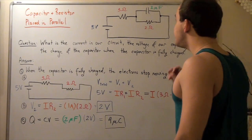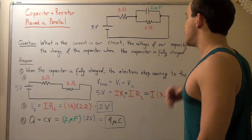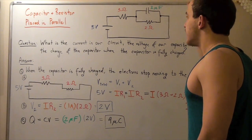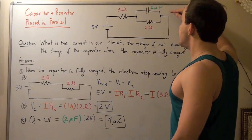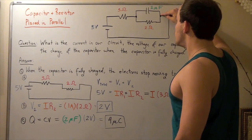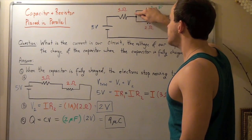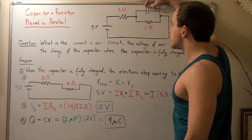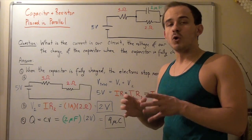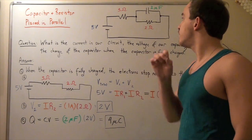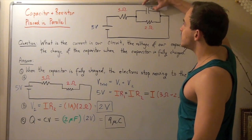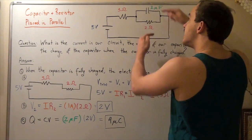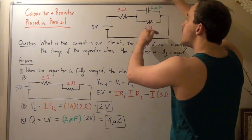Now let's find the voltage and the charge on this capacitor. Notice that even though charge is not moving from this point to this point, there is still a voltage on this capacitor. The difference in voltage is zero, but there is still a voltage. And the voltage on this capacitor is the same as the voltage on this resistor, because these are in parallel.